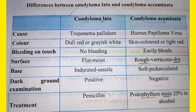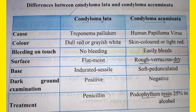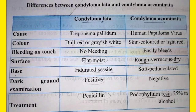Because condyloma accumulata is light red, it bleeds easily when you touch the cauliflower-like lesion. Condyloma lata, however, has flat-top, grayish-white lesions — these do not bleed. So lata does not bleed, but accumulata bleeds very easily on contact.